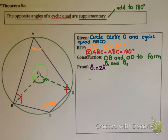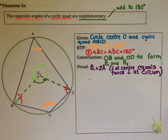First of all, angle O1 is equal to twice angle A. The reason is: angle at center equals twice angle at circumference — this is from Theorem 2. The chord BD forms angle O1 at the center and also forms angle A at the circumference. So angle O1 equals twice angle A.